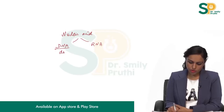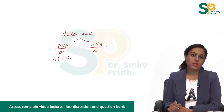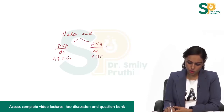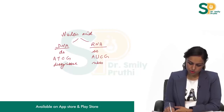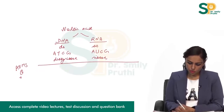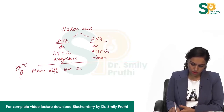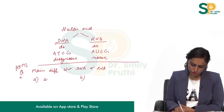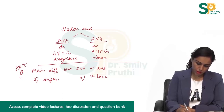DNA is double stranded, RNA is single stranded. DNA has four nitrogenous bases — A, T, C, G — but RNA has A, U, C, G. DNA has deoxyribose and RNA has ribose. This difference was tested in the PGA entrance exam and in the AIIMS exam. The question was: what is the main difference between DNA and RNA? The two options are sugar or nitrogenous base — so what will be the answer?